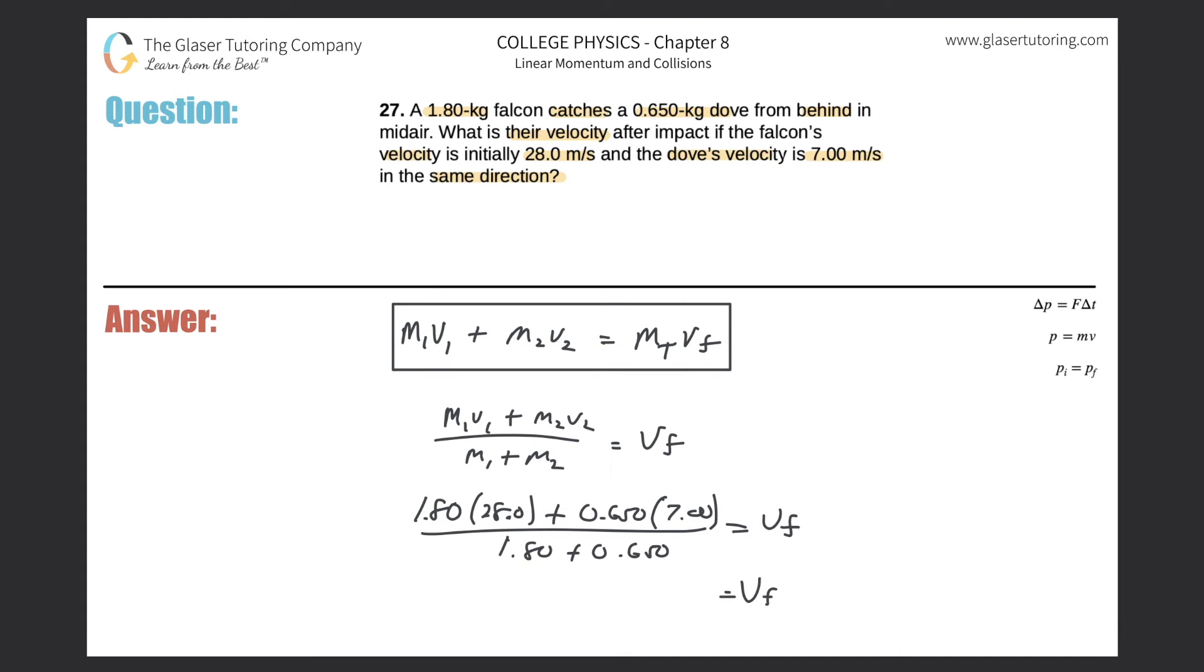So now basically all we have to do is just plug it in. I love these type of problems, I'm sure you do too. So 1.8 times 28 plus 0.65 times 7, all divided then by 1.8 plus 0.65, works out to be a value of 22.4 meters per second. And it's positive, they're moving still in the same direction as before.